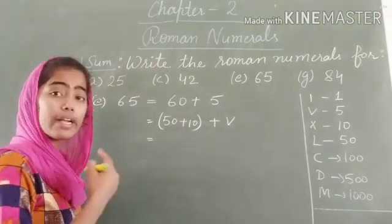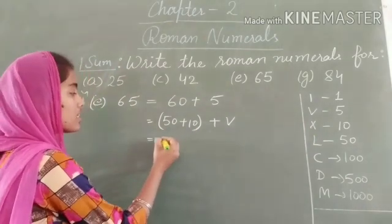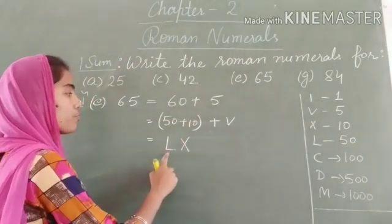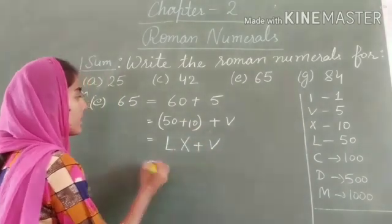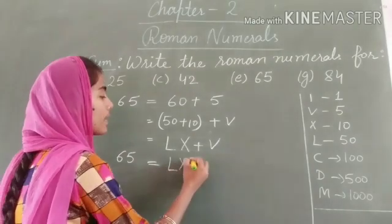We are using the rule of addition, so the smallest value is written on the right side. Therefore I can write it as LX. LX stands for 60. So 60 + V gives us the required answer for 65, which is LXV.